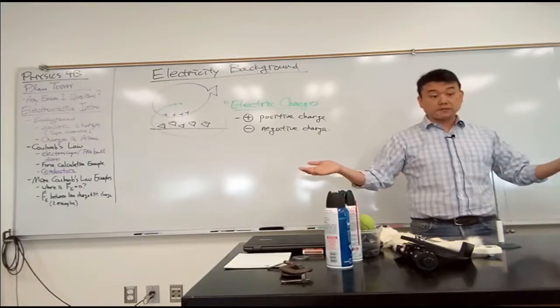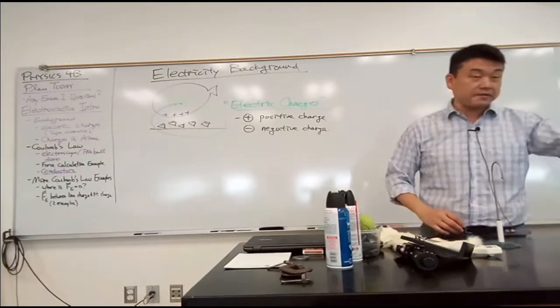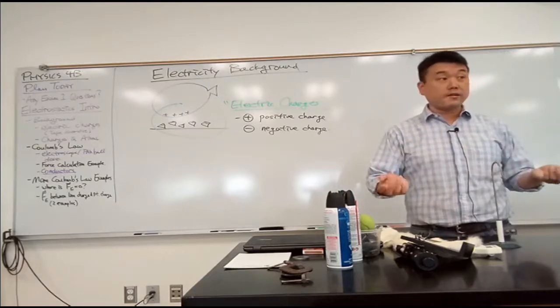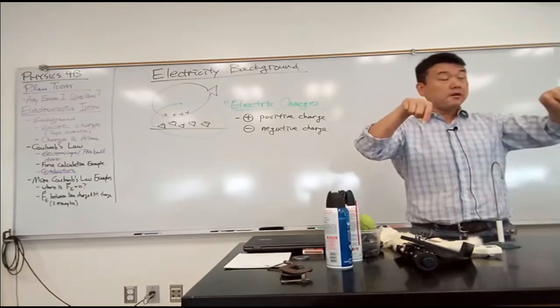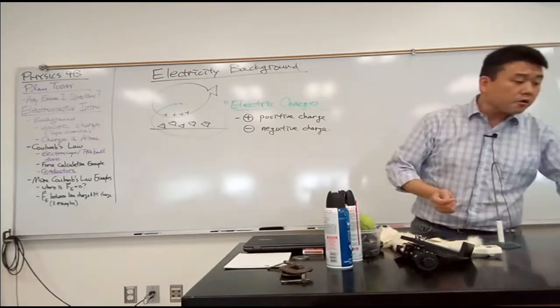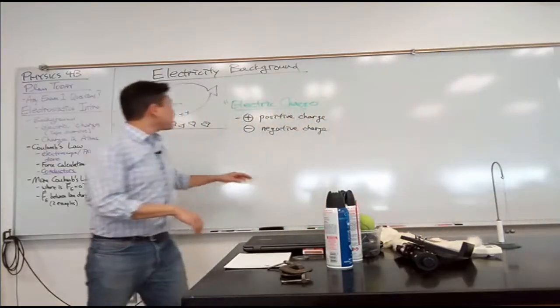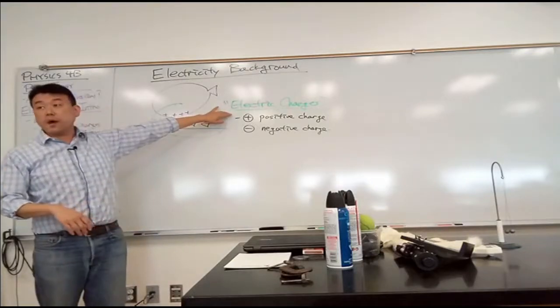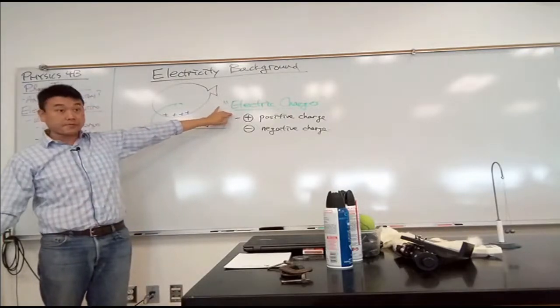and it can be repulsive. And in this particular case, with the same two objects, you could arrange them in such a way that they were repulsive initially, but then after some interaction, they are now attractive. So the description using electric charge is a way to describe exactly how that might be happening.